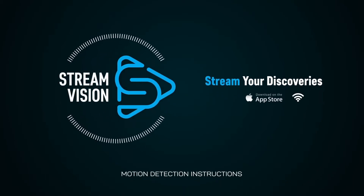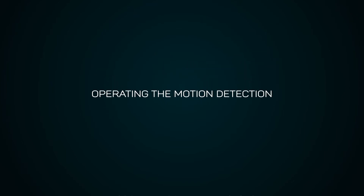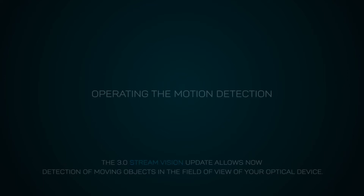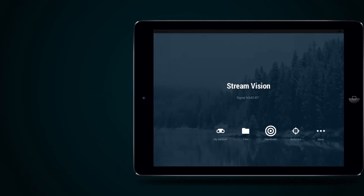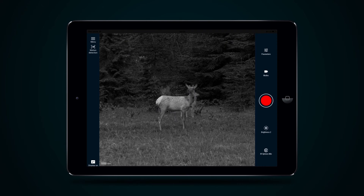The 3.0 StreamVision update now allows detection of moving objects in the field of view of your optical device. Once connection with your optical device is installed, press the Viewfinder button in the main menu of the application.